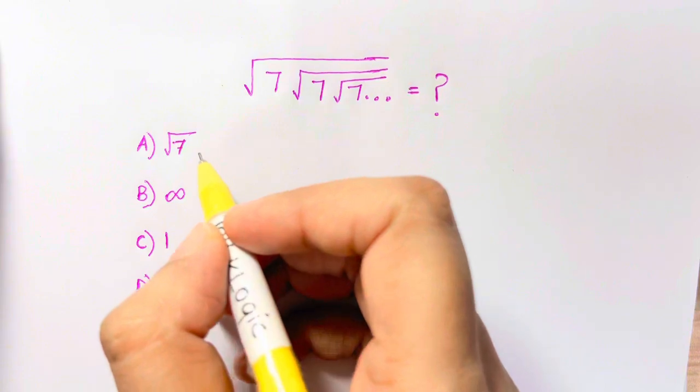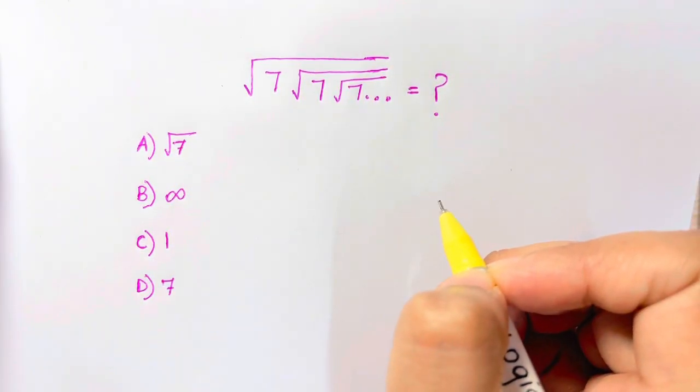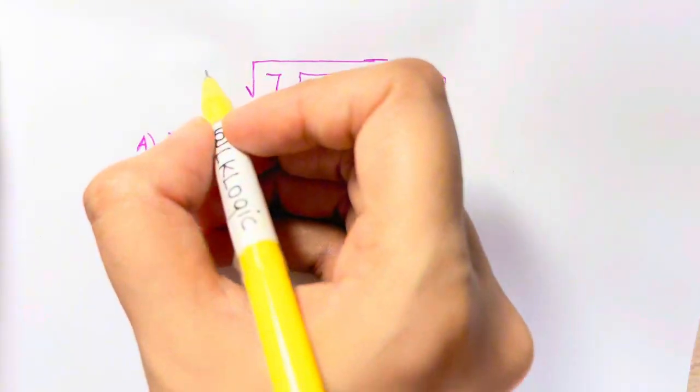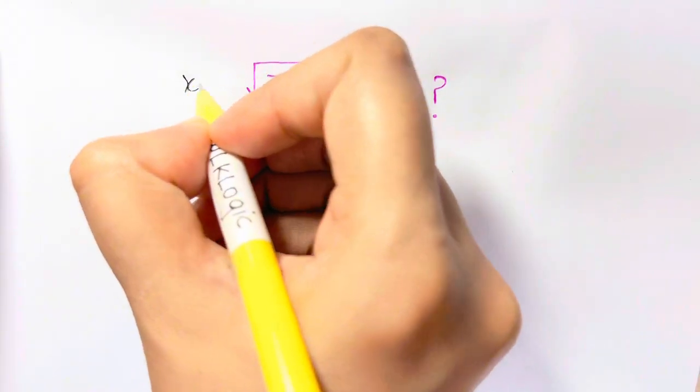So let's see, what is the trick which you have to use here is, suppose or let this whole term be equal to x.